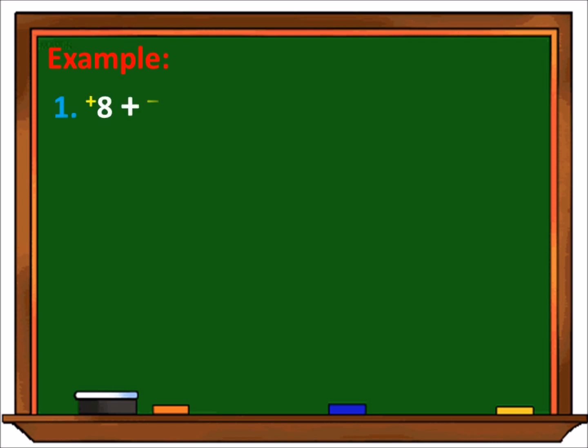Let's try this example. Number 1: positive 8 plus negative 3. Mas malaki yung 8, kaya ang sign na gagamitin ay positive. Then susubtract natin yung dalawang number. Kaya ang answer is positive 5. Number 2: positive 6 plus negative 15. Mas malaki yung 15, kaya ang gagamitin na sign ay negative. Then subtract natin yung dalawang number — 15 minus 6 is 9. Kaya ang answer is negative 9.